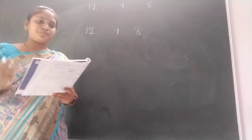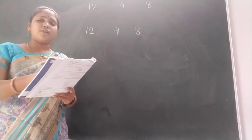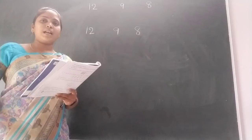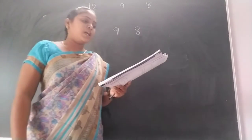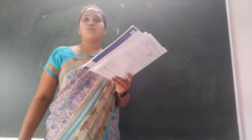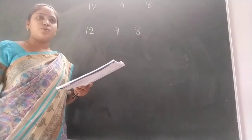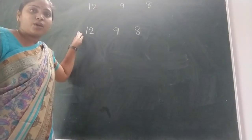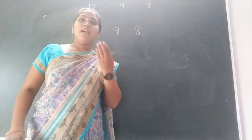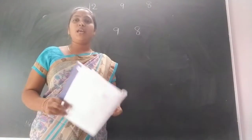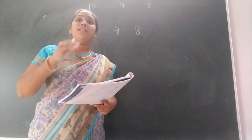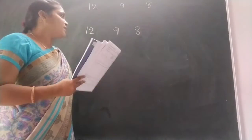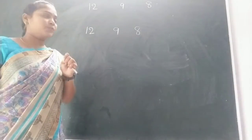We grouped correctly. The objects that can be grouped in 2s are called even numbers. So here, we grouped 12 umbrellas — means 12 is an even number. If we make objects in groups of 2s without any remainder, that is an even number. So here 12 is an even number.